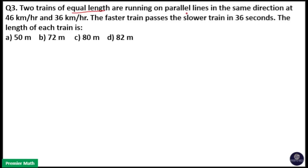Two trains of equal length are running on parallel lines in the same direction at 46 km per hour and 36 km per hour. The faster train passes the slower train in 36 seconds.